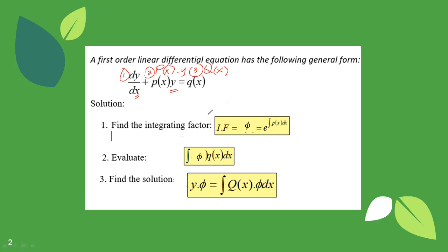There should only be two terms seen in your first order linear differential equation: the derivative, the product of your unknown function to an expression in terms of your independent variable, and on the right side, an expression in terms of the independent variable only. Your DE is said to be linear if it has this particular form. Now if it is already linear — the first step is to determine the integrating factor, phi, which is equal to e raised to the integral of P of x dx.